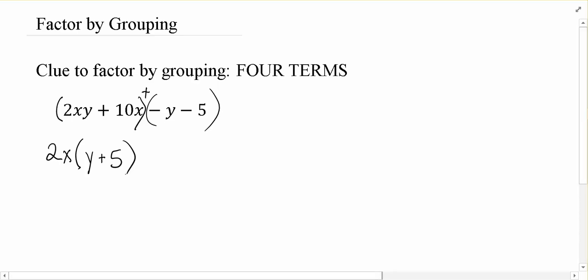And it's our decision on which one to do. But basically, what we want to have happen is we want to have the parentheses that's left over. We want those to be matching between the two things that we group together. So I'm going to factor a negative 1 out. And that would leave me positive y and positive 5.